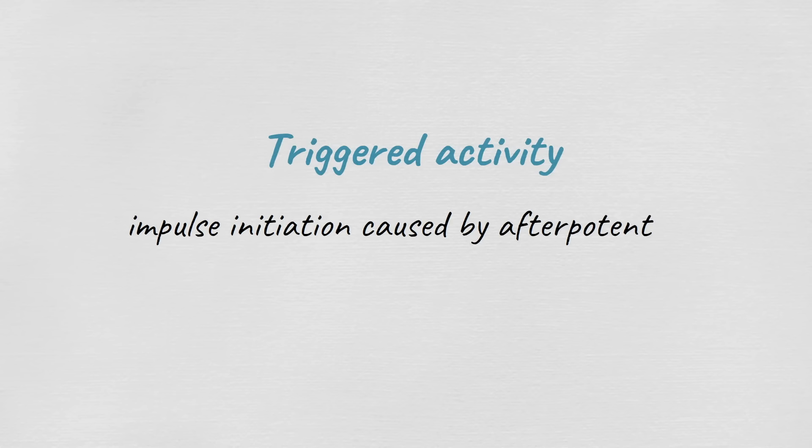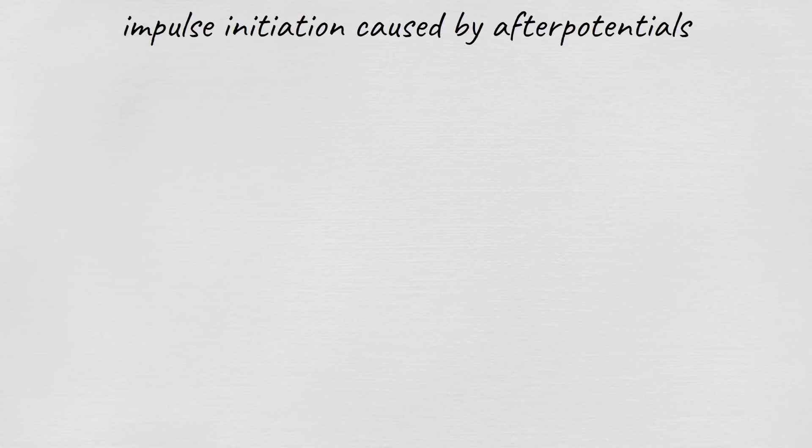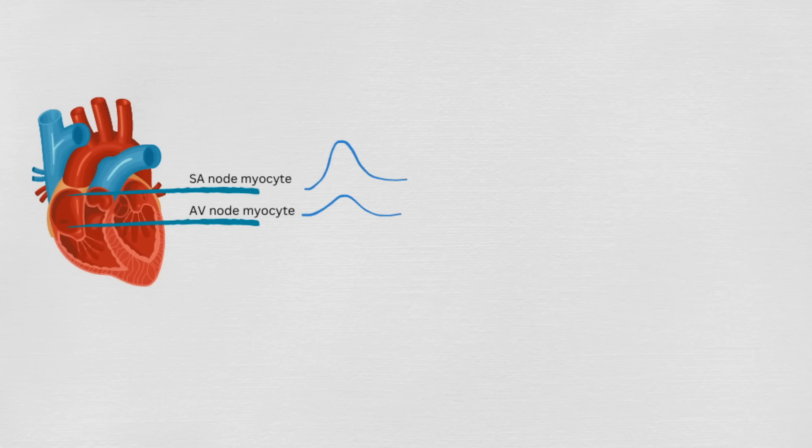Now the second mechanism is triggered activity. Triggered activity is defined as an impulse initiation caused by afterpotentials. But first, let's quickly review the normal action potential of both atrial and ventricle myocytes and SA/AV node myocytes.